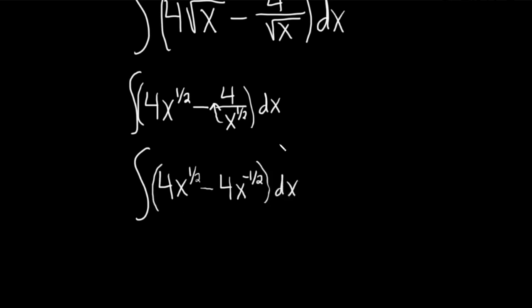So now everything is x to a power so we can use the power rule. Recall that the power rule says if you have x to the n dx this is equal to x to the n plus one over n plus one plus our constant. And this formula is only valid if n is not equal to negative one. So in this case we're okay there. n is not negative one. So we can use this formula.